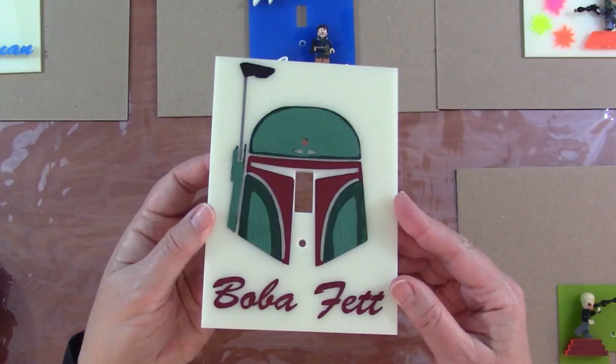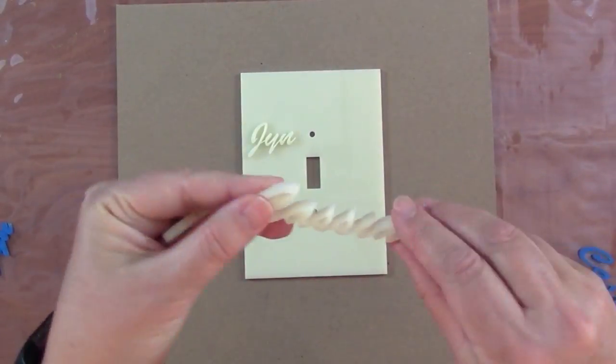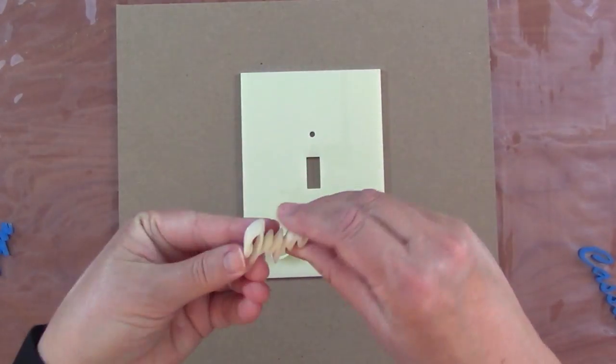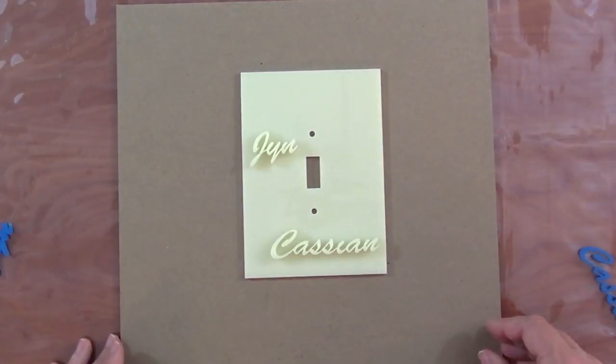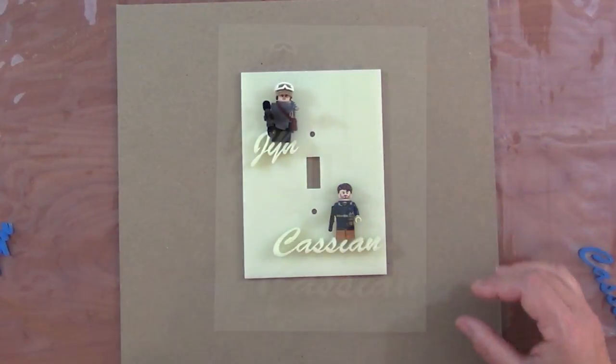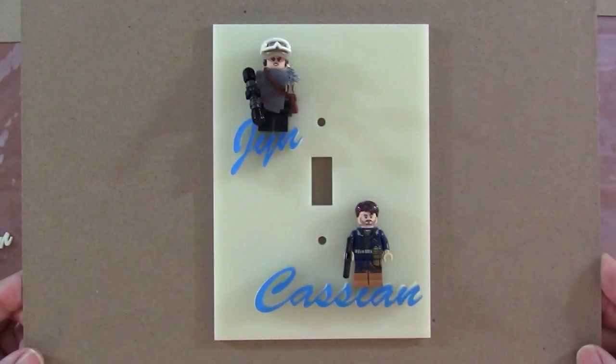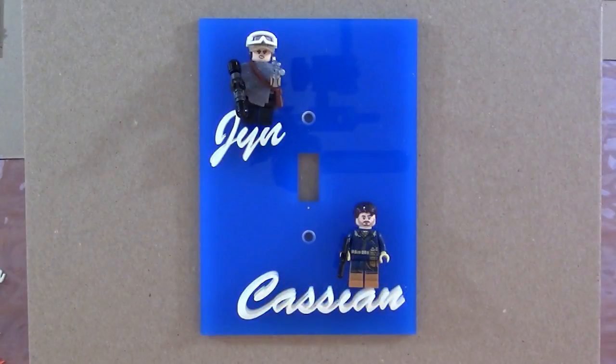Now I get to move on to what for me is really the fun part which is the experimentation. I have my bowl of components and here's actually my original vision for the Rogue One plate was to have white on white Jyn and Cassian names and then the figures mounted on top of those. And I like that but I also tried it putting blue on the top layer over the ivory and I tried a blue plate with ivory letters.